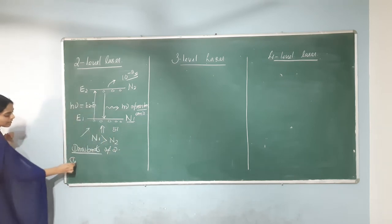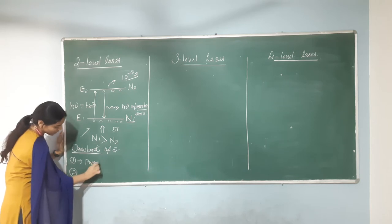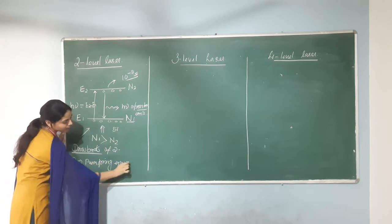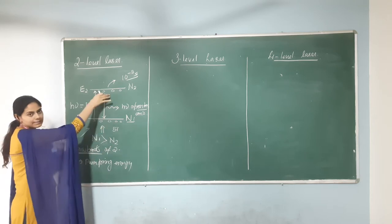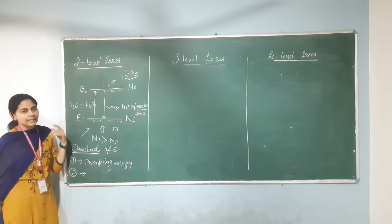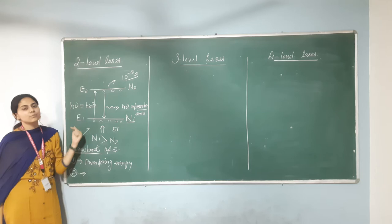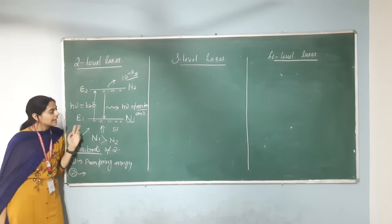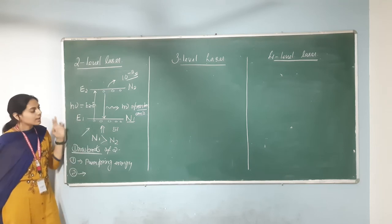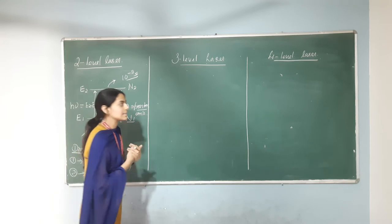So the two drawbacks are: first, we require more pumping energy to pump atoms to the higher excited state E2. Second, at any particular time we are not able to achieve population inversion between the two states, because at any time we have the same population on E1 and E2. Without population inversion, we cannot get lasing action.